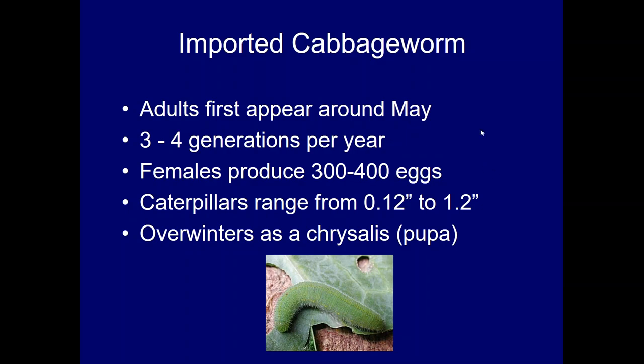The imported cabbage worm caterpillar is easy to recognize — it is velvety green with a faint yellow stripe running lengthwise along its body, and it tends to be slow-moving compared to other brassica pests like the diamondback moth. Adults appear around early May, and there are generally three to four generations per year. Females can produce 300 to 400 eggs, and this pest overwinters as a pupa or chrysalis attached to brassica crop debris.